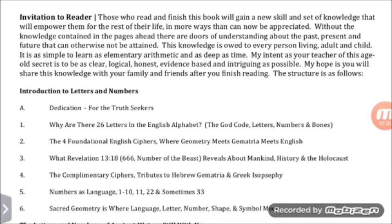What Revelation 13:18, 666, the Number of the Beast, reveals about mankind, history, and the Holocaust. The complementary ciphers — tributes to Hebrew Gematria and Greek Isopsephia. Numbers as language, 1 through 10, 11, 22, and sometimes 33. Sacred Geometry is where language, letter, number, shape, and symbol meet.